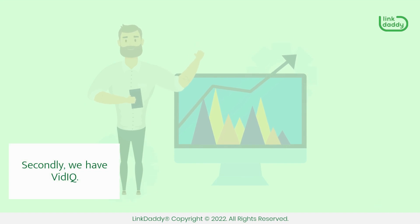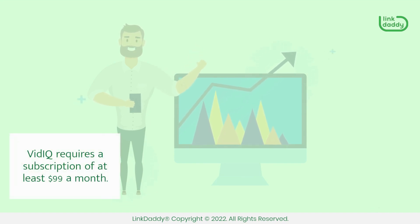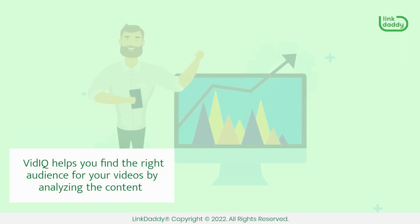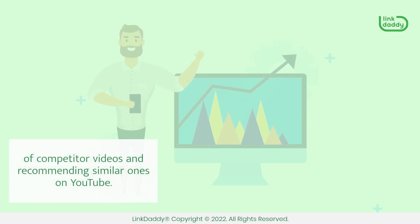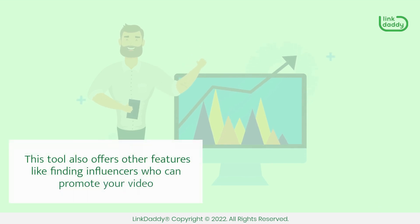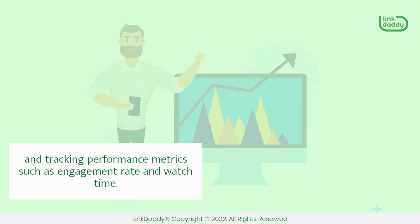Secondly, we have vidIQ. vidIQ requires a subscription of at least $99 a month. vidIQ helps you find the right audience for your videos by analyzing the content of competitor videos and recommending similar ones on YouTube. This tool also offers other features like finding influencers who can promote your video and tracking performance metrics such as engagement rate and watch time.